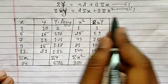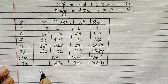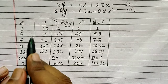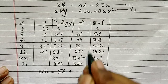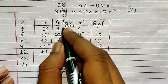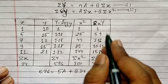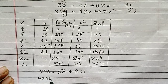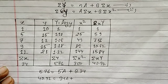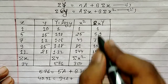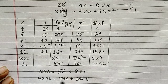Now substituting into the normal equations. Equation 1: summation Y = nA + B·summation x → 5.76 = 5A + 34B, since n = 5 terms and summation x = 34. Equation 2: summation xY = A·summation x + B·summation x² → 40.92 = 34A + 300B. Now solve these equations using a calculator.